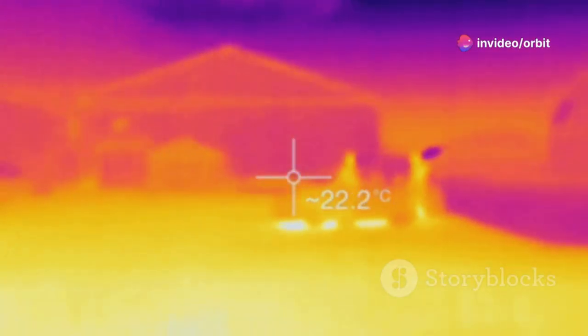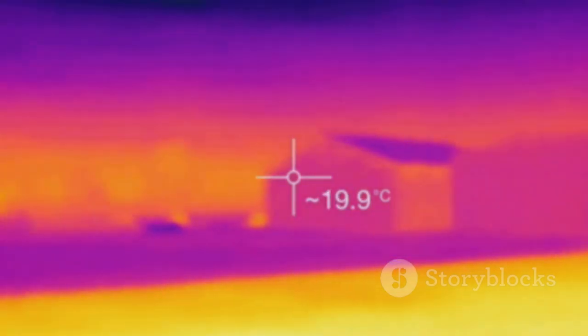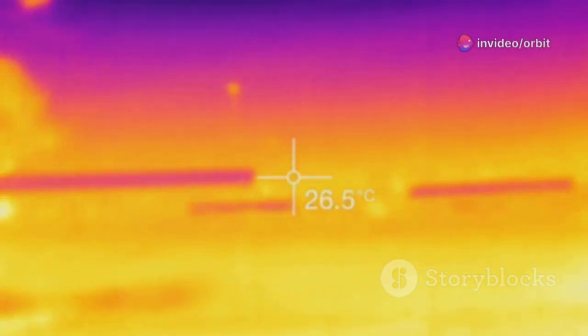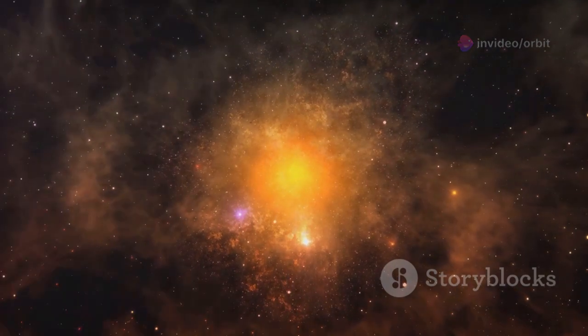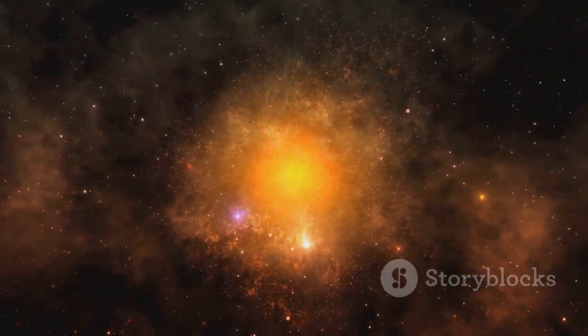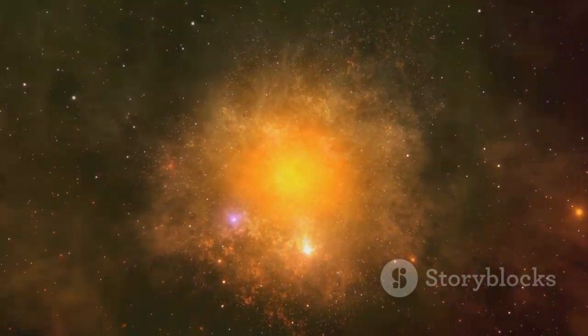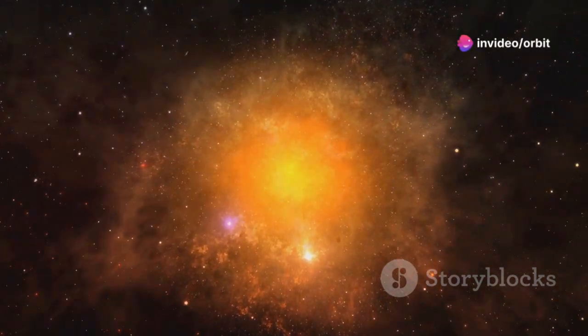On one side of the sunshield, temperatures soar high enough to boil water, while on the other, it's hundreds of degrees below zero, colder than the coldest places on our planet. This extreme temperature difference is essential for Webb to function as an infrared observatory. Thanks to this extraordinary engineering, Webb can detect the faintest whispers of light from the early universe, light that has traveled across space and time, carrying secrets from the dawn of galaxies.